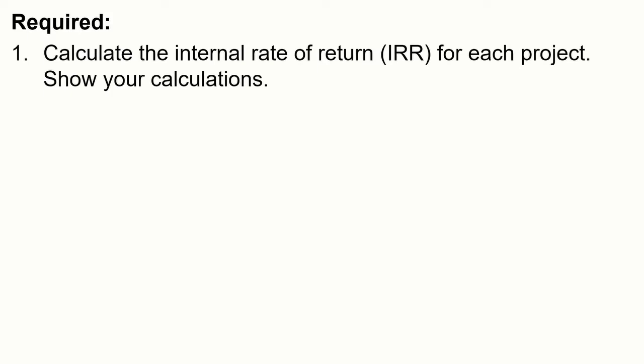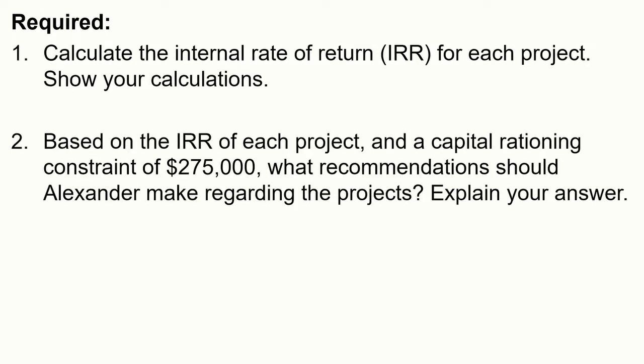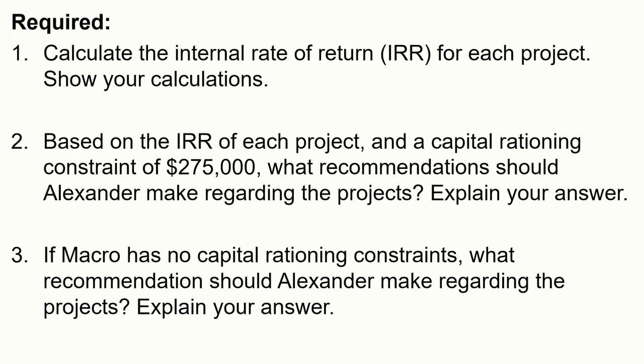The requirements include: first, calculate the internal rate of return for each project and show calculations. The good news is that all cash flows are the same each period, so we can use the present value of an annuity table. Second, based on the IRR of each project and a capital rationing constraint of $275,000, what recommendations should Alexander make regarding the projects?